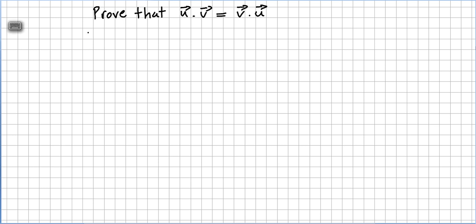This video is on a chapter of vectors in vector spaces and we are on dot products. We are on a series of videos where we are doing a couple of proofs. In this video we are asked to prove that u times v equals v times u, meaning the vector inner product, the dot product, is commutative.